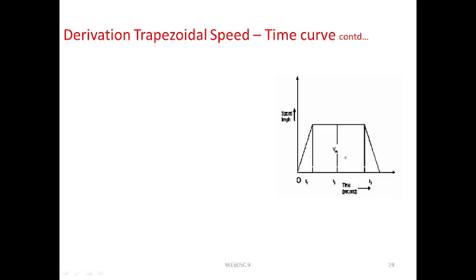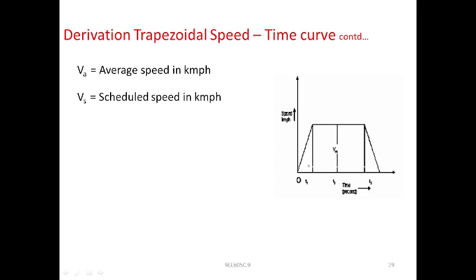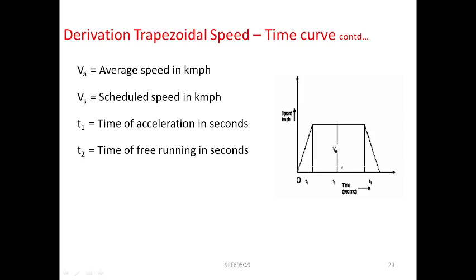Vm is the maximum speed in km/h, Va is the average speed in km/h, and Vs is the schedule speed in km/h. T1 is the time of acceleration in seconds, T2 is the time of free running in seconds, and T3 is the time of retardation in seconds. K is defined as a constant equal to 1/α plus 1/β.